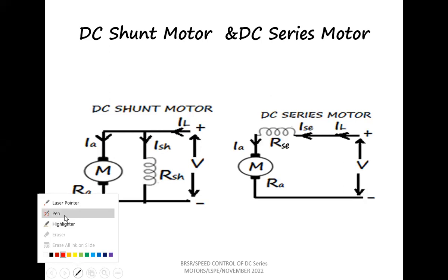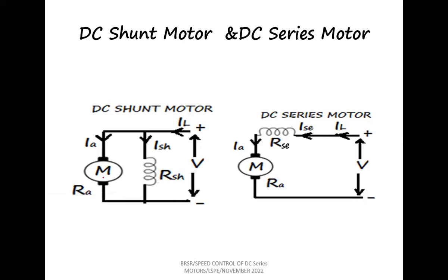The basic parts of a DC machine include an armature, represented by a circle with two brushes, and a field. In the case of a shunt motor, the armature and the field are connected in parallel. In the case of a series motor, the armature and the field are connected in series.